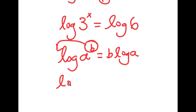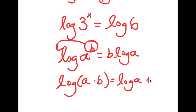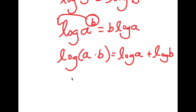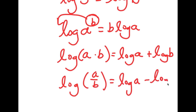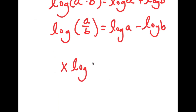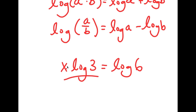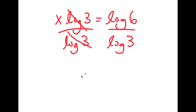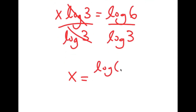There are three important logarithmic properties. The first: log of a to the power of b equals b times log a. The second: log of a times b equals log a plus log b. The third: log of a over b equals log a minus log b. So we have log 3 to the power of x equals log 6. Using the first property, I can move x to the front: x times log 3 is equal to log 6. Dividing both sides by log 3, I get x is equal to log 6 over log 3.